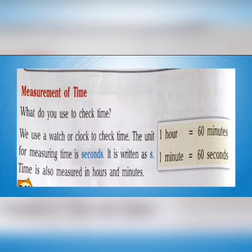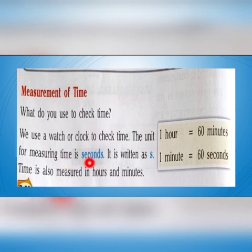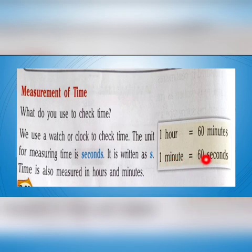Next is measurement of time. We use a clock or watch to check time. The unit for measuring time is seconds. There are also larger units like minutes and hours. 60 seconds equal one minute, and 60 minutes equal one hour.